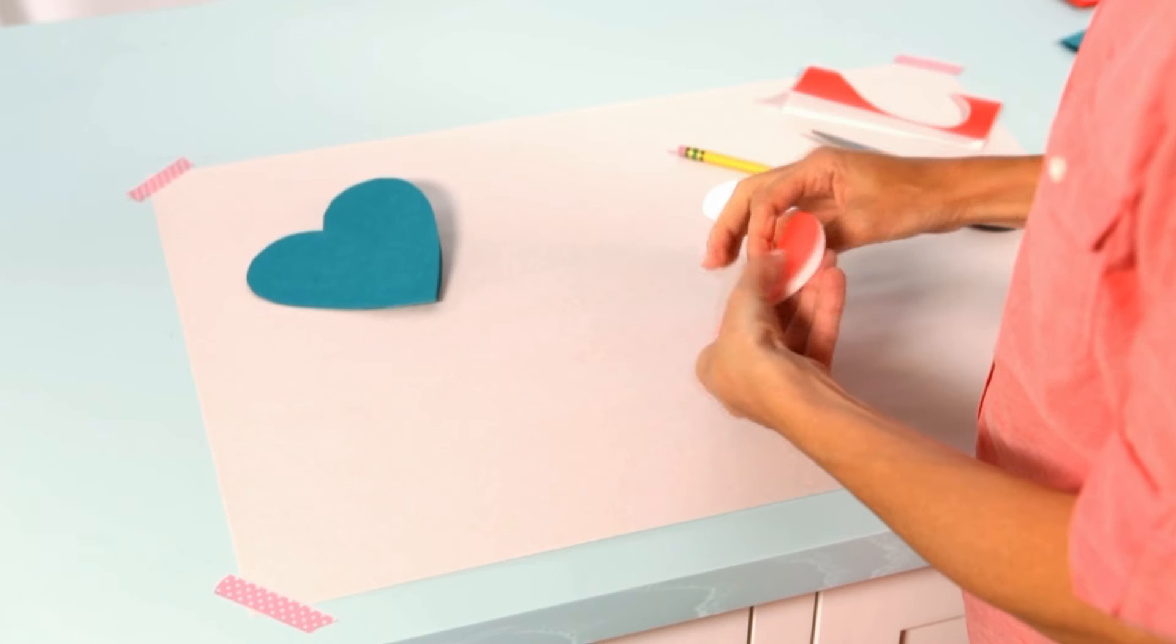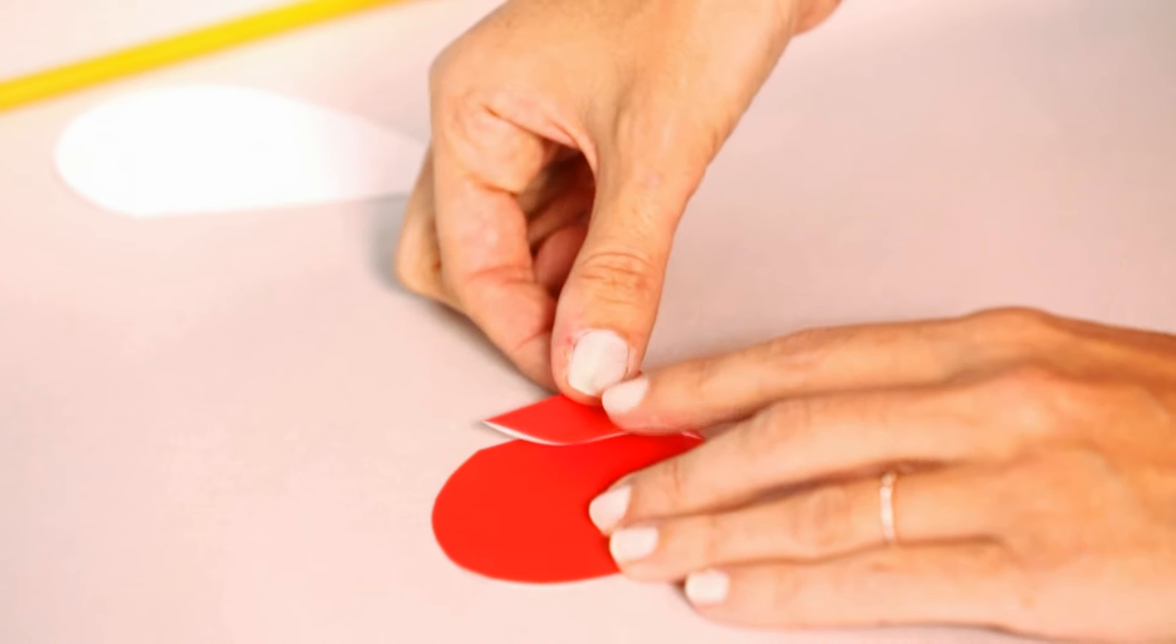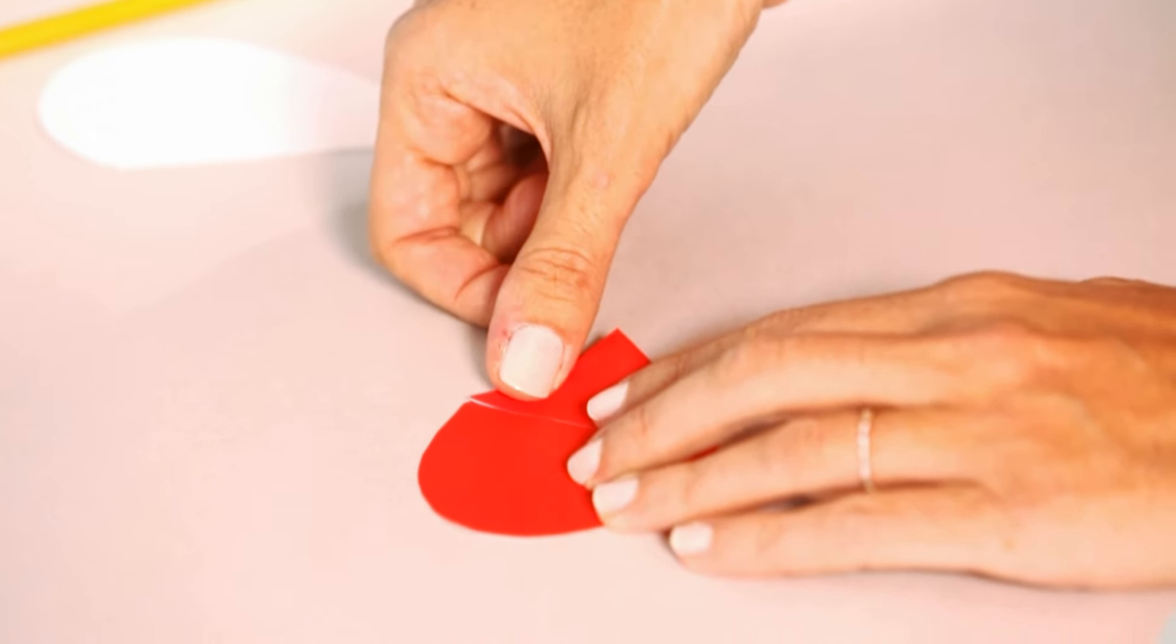Now we're going to fold the paper like we would to make a snowflake. Fold the bottom point of the heart up to the center divot at the top. Turn it over and fold the bottom edge up so it lines up with the original center fold.